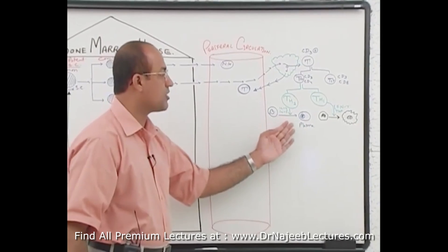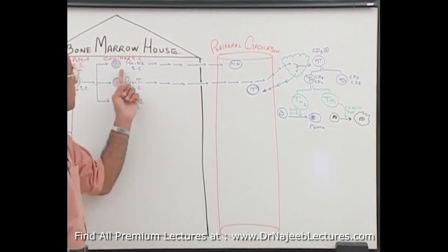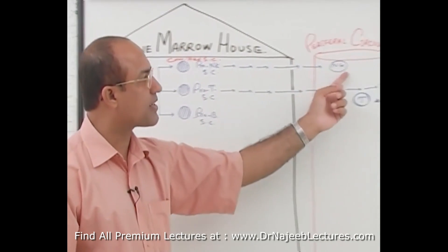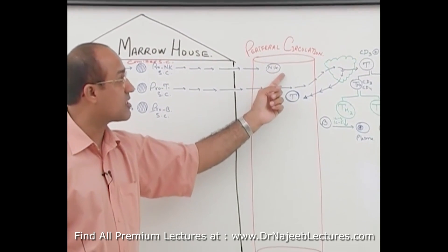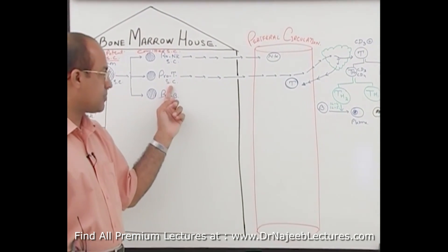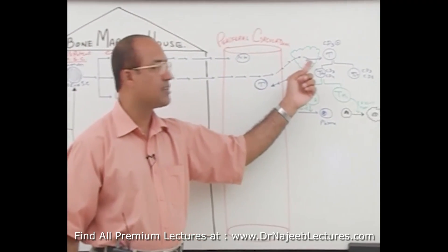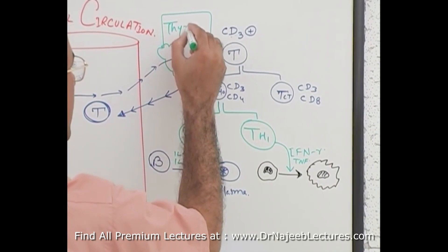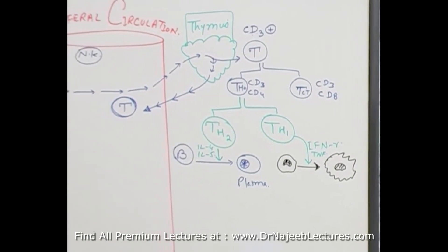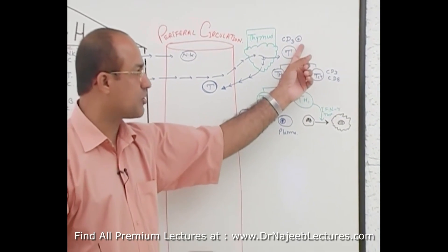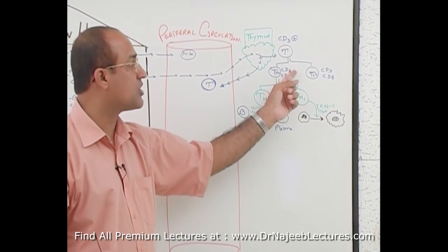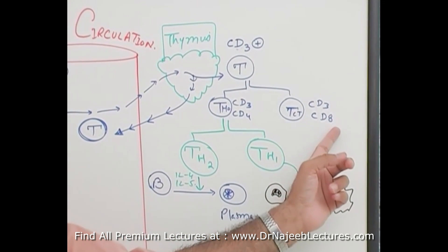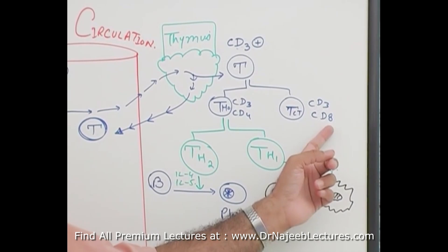To recap: pro-natural killer stem cells produce natural killer cells, which are neither T cells nor B cells. Pro-T stem cells produce cells that are trained in the thymus and emerge as T cells. All T cells are CD3-positive; some are additionally CD4-positive, called T helper cells, and others are additionally CD8-positive, called T cytotoxic cells.